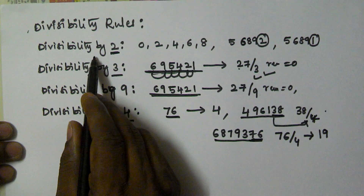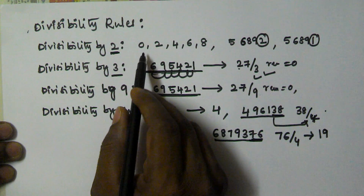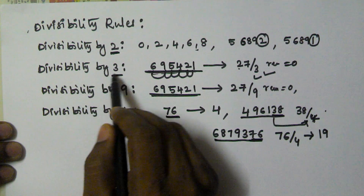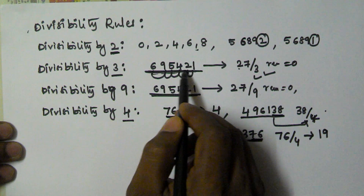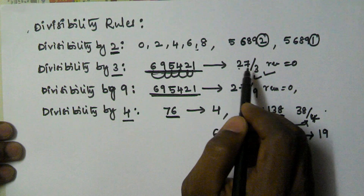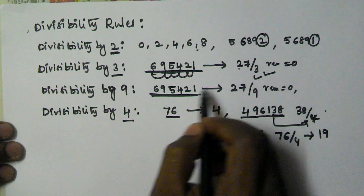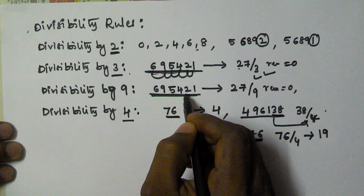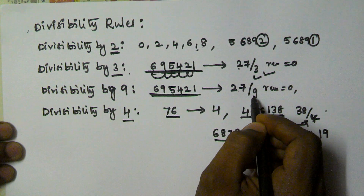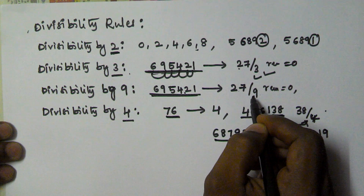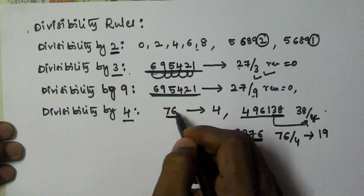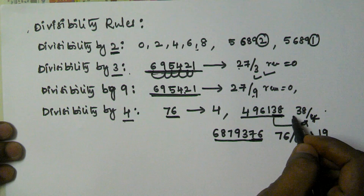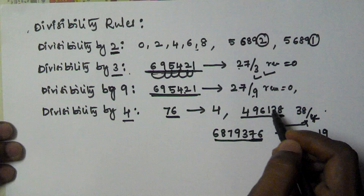Let me repeat everything one more time. Divisibility by 2: if the unit digit of a given number is 0, 2, 4, 6, or 8, then it is divisible by 2. Divisibility by 3: if the sum of digits is divisible by 3. Divisibility by 9: same as 3 — if the sum of digits is divisible by 9. Divisibility by 4: if the last two digits (unit and tens) are divisible by 4, then the whole number is divisible by 4.